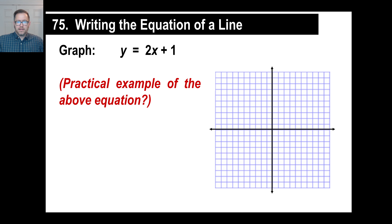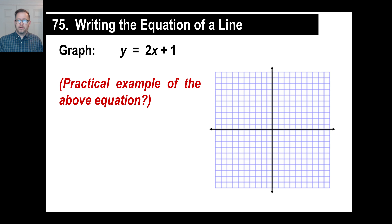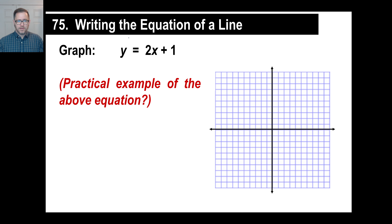That is a typical graph: Y equals 2x plus 1. Now we have done this before, where we've simply just placed in some value for x and then we saw what we got for y. Let's pretend this is our explanation here of y equals 2x plus 1.